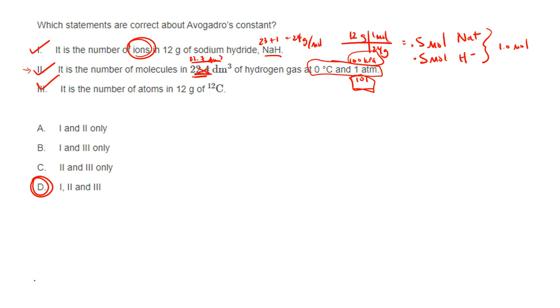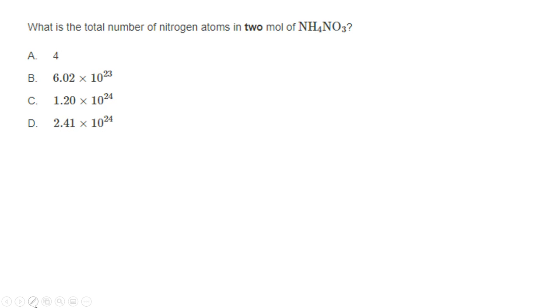But again, roman numeral II is probably kind of weird. It's a number that you don't know. So sometimes we would see questions like this on the IB exam. Total number of nitrogen atoms in two moles of ammonium nitrate.